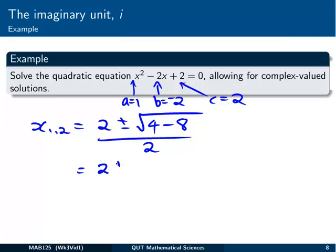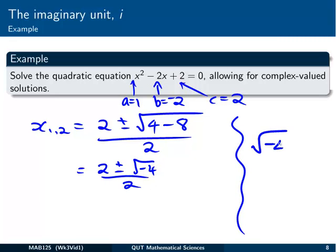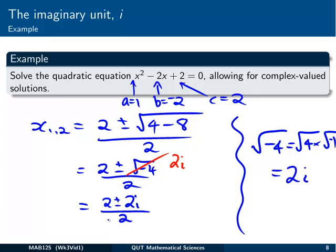So we've got 2 plus or minus the square root of minus 4, all over 2. I'm just going to go off in the scribble space again. The square root of minus 4 is the same as the square root of 4 times the square root of minus 1. The square root of 4 is 2, and the square root of minus 1, we know that's i. So we've got there, we can replace that now by 2i, using our new imaginary unit. So we've got 2 plus or minus 2i, all over 2.